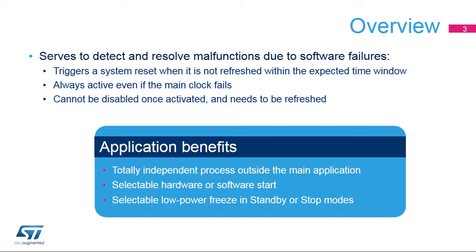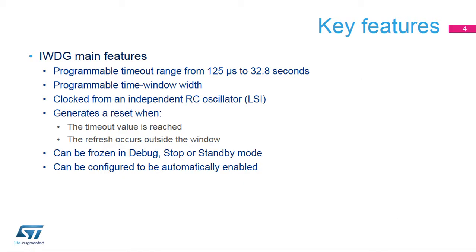One of the main benefits for applications is its ability to run independently from the main clock. The Independent Watchdog offers a wide range of timeout values, from 125 microseconds to 32 seconds. It is clocked by a 32 kHz RC oscillator, which cannot be disabled when the Independent Watchdog is enabled. It generates a reset when the program timeout value elapses, or when a watchdog refresh occurs outside a program time window. This window feature is optional, and not present in all Independent Watchdogs.